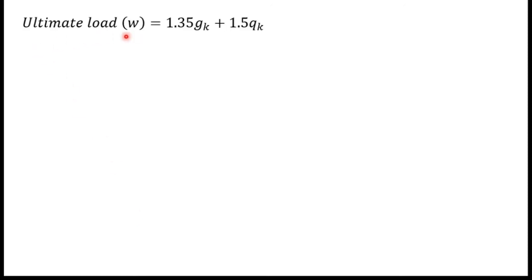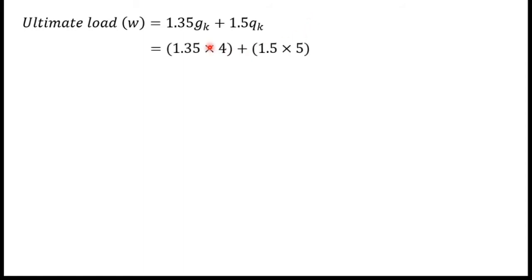First, we have to find the ultimate load w using the equation: w = 1.35·gk + 1.5·qk, where gk is the dead load and qk is the variable load. Substituting the given values of gk and qk, I will simplify to get w = 12.9 kN/m.